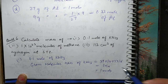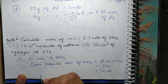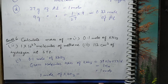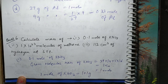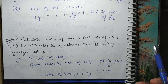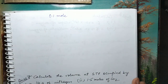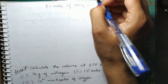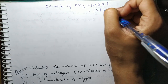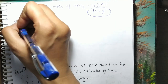Ab agar 1 mol itne grams ke barabar hai, to 0.1 mol kitne gram ke barabar hoga? Calculate kar lete hain: 0.1 mol of KNO₃ is equal to 101 multiplied by 0.1 = 10.1 gram. Yeh aapka first part ka answer aa gaya.